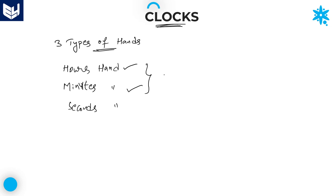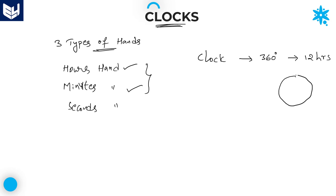A clock is nothing but 360 degrees, which is equal to 12 hours. The clock is in the shape of a circle — the entire circle is 360 degrees — and the total time period is 12 hours. So the entire clock is 12 hours duration and the angle of the total clock is 360 degrees. Now we will discuss about the hours hand and minutes hand.